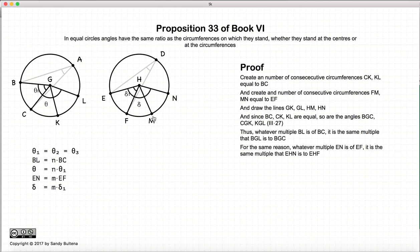Likewise, EF, FM, and MN are all equal, so the angle here is delta1, delta1, and delta1. Therefore, the total angle delta is equal to M times delta1, where M is any positive integer.